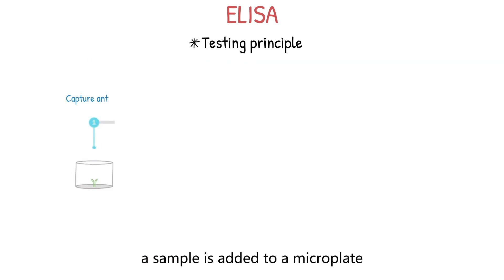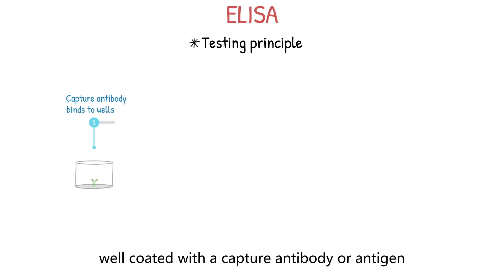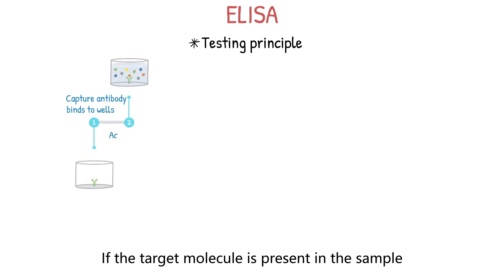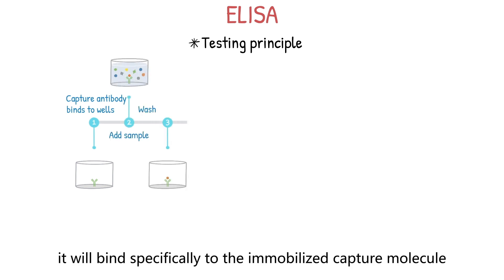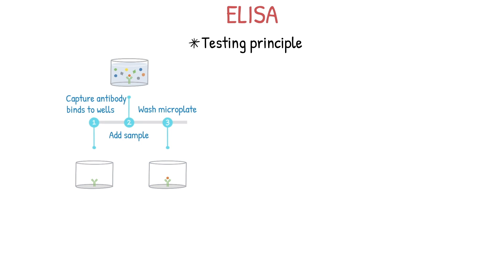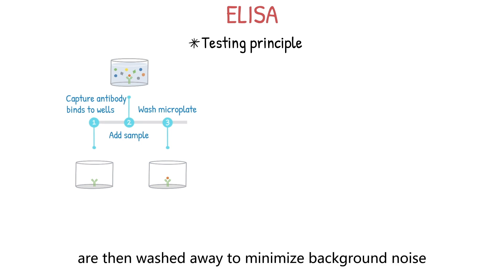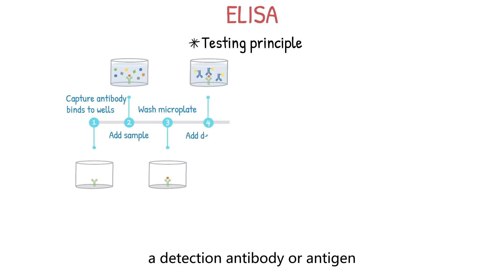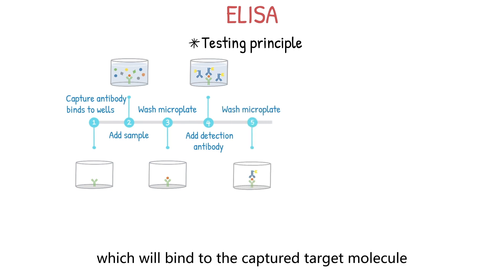In an ELISA, a sample is added to the microplate well coated with a capture antibody or antigen. If the target molecule is present in the sample, it will bind specifically to the immobilized capture molecule. Unbound components are then washed away to minimize background noise. Next, a detection antibody or antigen conjugated to an enzyme is added, which will bind to the capture target molecule, forming a complex.